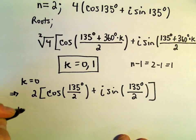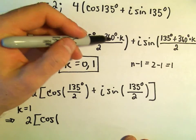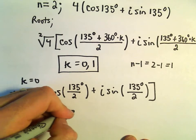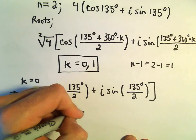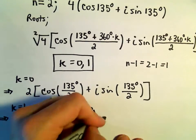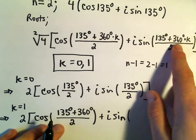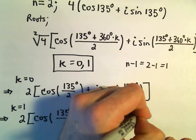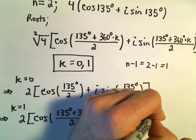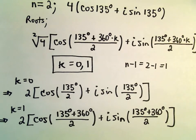Let's see, our second one will be when k equals 1. So when k equals 1, we'll get 2 times cosine of, well, if k equals 1, we'll get 135 degrees plus 360 degrees, all over 2, plus i sine of, well, 135 degrees plus 360 degrees, all over 2. And of course, again, we can always just simplify these down a little bit further.